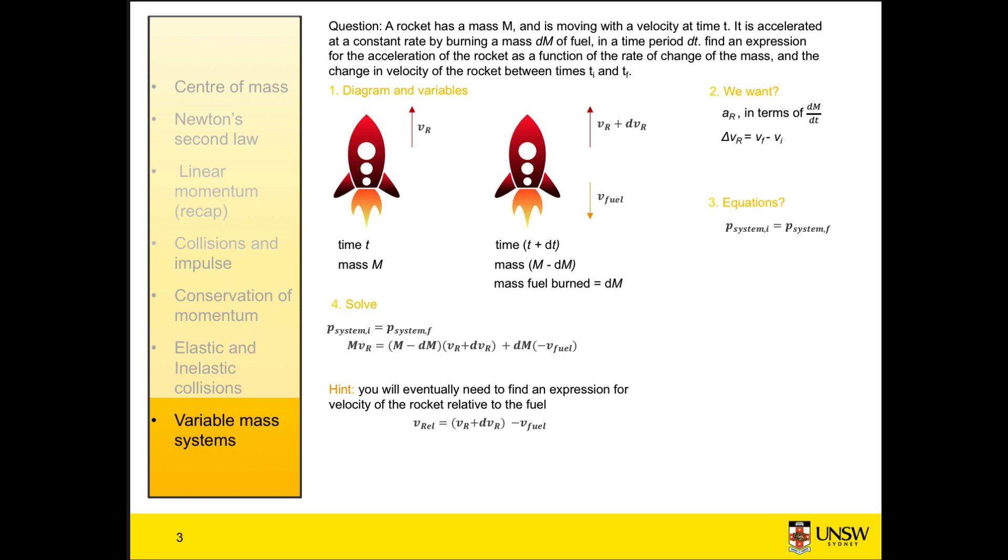We're looking for an expression for the velocity of the fuel, so I rearrange. Then I substitute that expression back into my original equation. Now I have an equation all in terms of the velocity of my rocket, which is good because I'm trying to find the acceleration. This equation simplifies down to a very nice equation.